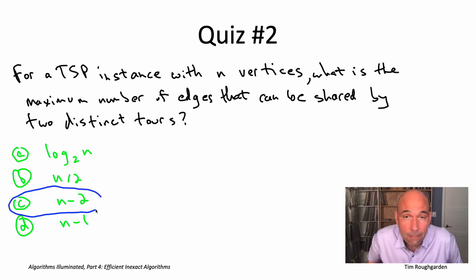The answer to this quiz is the third one. Two tours of n vertices can share n-1 edges, but no more than that. Why can't they share n-1 edges? Because once I tell you n-1 edges of a tour, it uniquely determines what the last one must be. The only way to turn it into a tour is to take two endpoints and connect them directly. So if two tours share n-1 edges, they have to share all edges and are not distinct. On the other hand, you can have distinct tours that differ in only two edges.